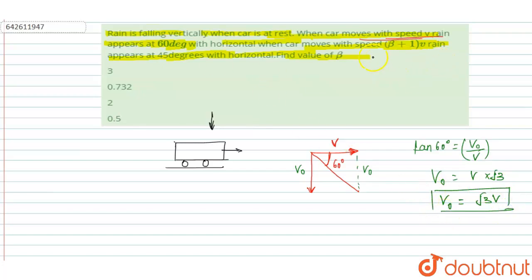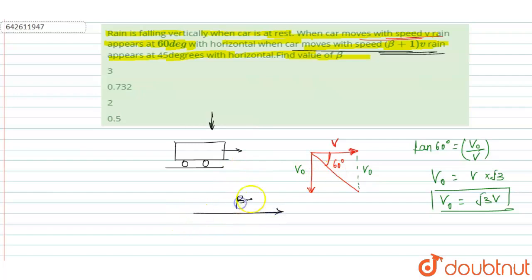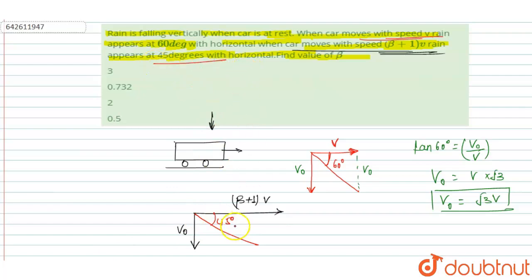In the second case, when the car moves with speed (β + 1) × V, rain is falling similarly with velocity V0, and the rain appears at 45 degrees with the horizontal.